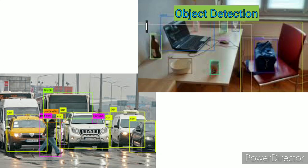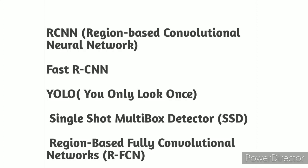2. Object detection: for example, say you have an image with a lot of cars and you want to do two things — detect all the cars in the image, and surround them with bounding boxes to localize their positions. The models used for these purposes include RCNN (region-based convolutional neural network), Fast RCNN, YOLO (you only look once), SSD (single-shot multibox detector), and RFCN (region-based fully convolutional networks).